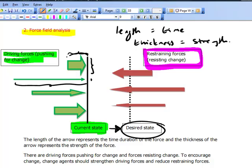So if you look at this example here, then that is a relatively short time that that force has been present. But it's a thick arrow, so it's quite a strong force. The one below it, the long, thin one, it's been there a long time, but it's a relatively thin force. So it's not very strong.